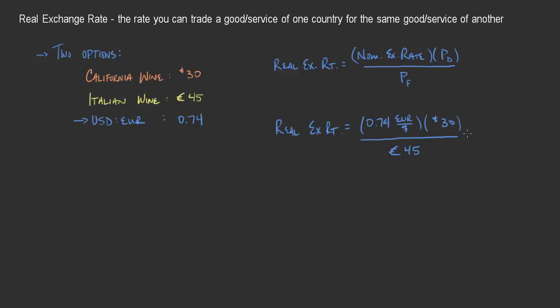If we're going through and we're going to solve this, just on the numbers themselves, we can solve it. It's 0.74 times 30, divided by 45. When I do that in my calculator, that works out to 0.493, almost one half.